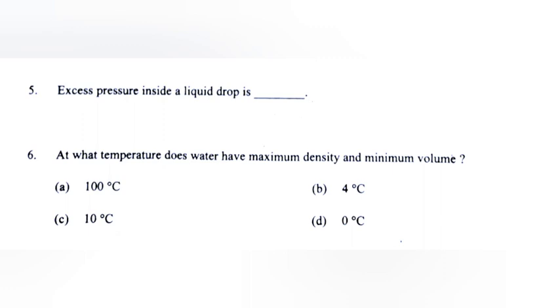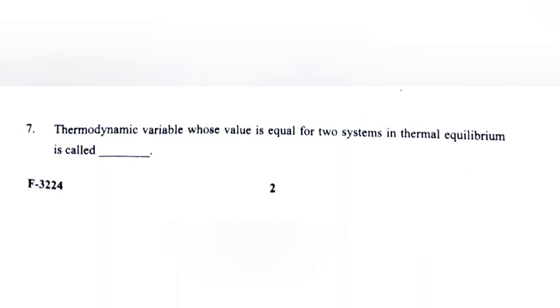Question 6: At what temperature does water have maximum density and minimum volume? Answer: B. 4 degree Celsius. Question 7: Thermodynamic variables whose value is equal for two systems in thermal equilibrium is called dash. Answer: Temperature.